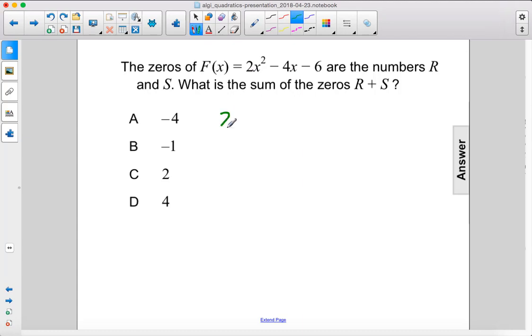Alright, so we'll rewrite this as our quadratic equation, set it equal to 0 and factor it. So we can actually immediately take a 2 out. 2 times x squared minus 2x minus 3 equals 0.